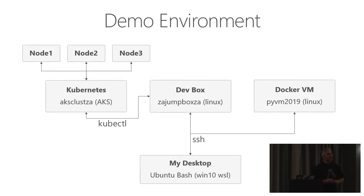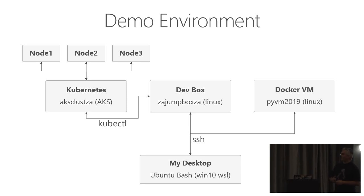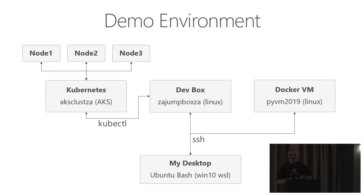It would be better to show you how this all works, right? So I'm going to demo some stuff for you, and hopefully it will take you from perhaps what you know right now to what Kubernetes is all about. My demo environment looks like this: I've got my desktop here running Windows 10, but I'm running the Ubuntu Bash shell on it. I'm SSH-ing into two VMs — my dev box, which is that jump box, and my Docker VM. Most of the work is going to be done on my dev box, and that can connect to my Kubernetes cluster which I've already spun up in the cloud.